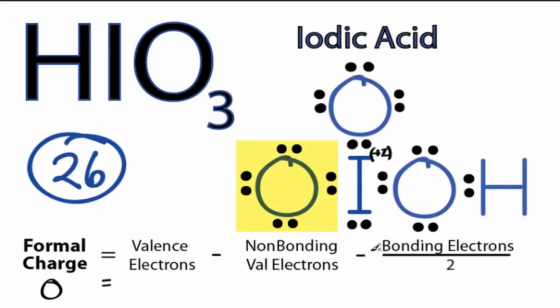For the oxygen on the left, we have 6 valence electrons from the periodic table. Minus non-bonding, we have 2, 4, 6. And then bonding, we have 2, which we'll divide by 2. So 6 minus 6 minus 2 is minus 1. And that minus 1 is going to be for this oxygen. And then also, since they're symmetrical there, for that oxygen. For the oxygen that's bonded to the hydrogen, we have 6 again from the periodic table. Non-bonding, we have 4.